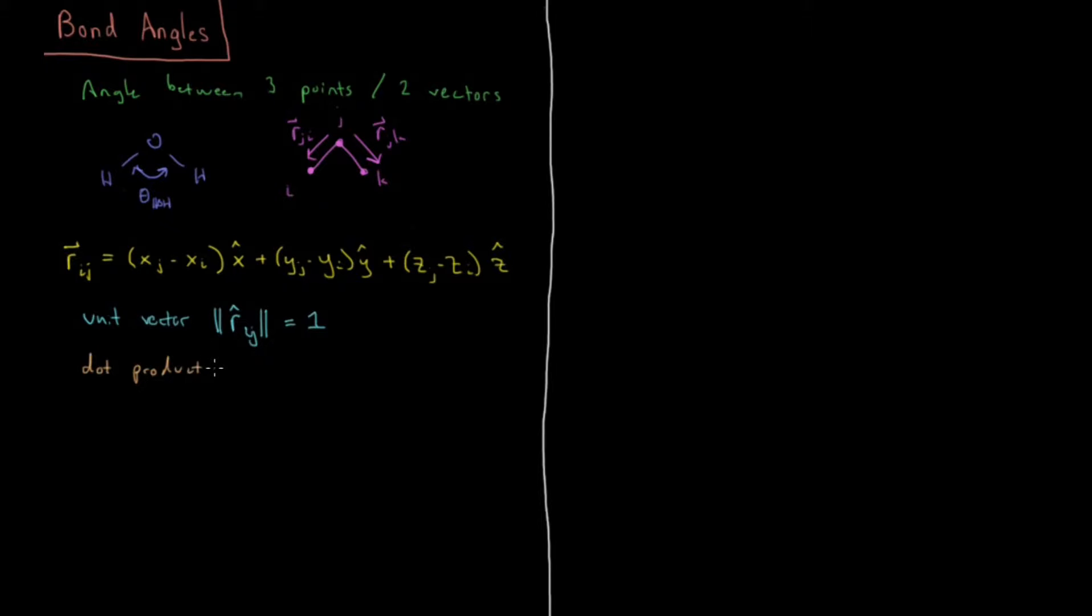So the dot product for two vectors A and B, A dot B equals, if they are 3D Cartesian vectors, AX times BX plus AY times BY plus AZ times BZ.